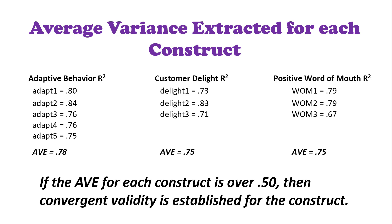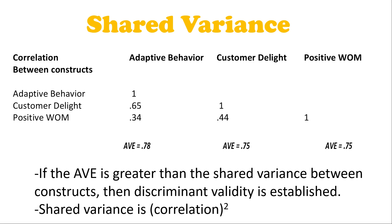To establish discriminant validity, Fornell and Larker use what they call shared variance. You get your constructs and do a correlation between them, then compare the shared variance — which is the correlation between constructs squared — versus your average variance extracted. If your AVE is higher than the shared variance between your other constructs, then you've established discriminant validity, because the AVE is higher than what is being shared with other constructs. That was the gold standard used over and over again.